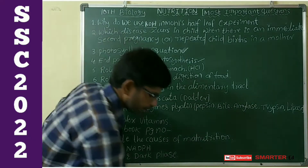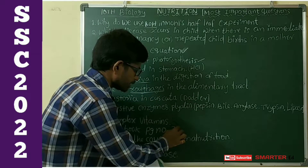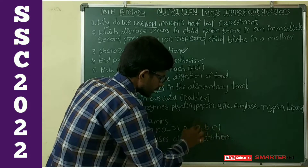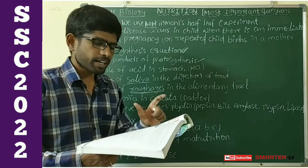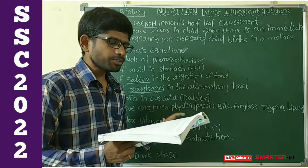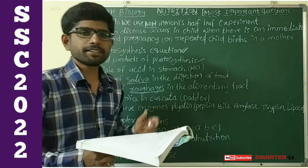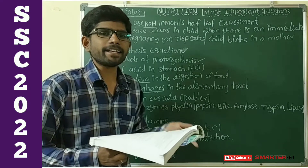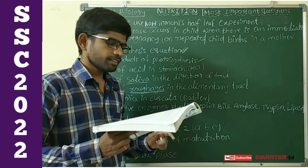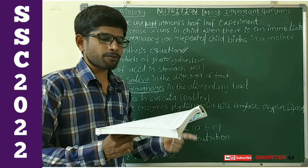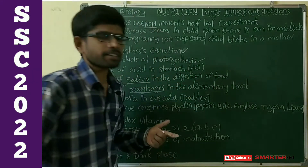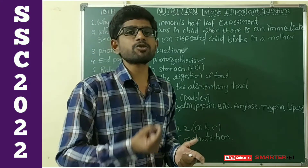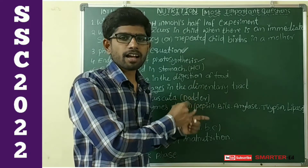Next, see the textbook, page number 21 — question number 2, parts A, B, and C are very, very important. Part A: why is photosynthesis considered a basic source for most living organisms? Part B: why is it right to call the dark phase of photosynthesis the light-independent phase? Part C: why is it necessary to de-starch a plant before performing any experiment on photosynthesis? Before conducting any photosynthetic experiment, we need to remove the starch from the plant's leaves, and we need to write why.